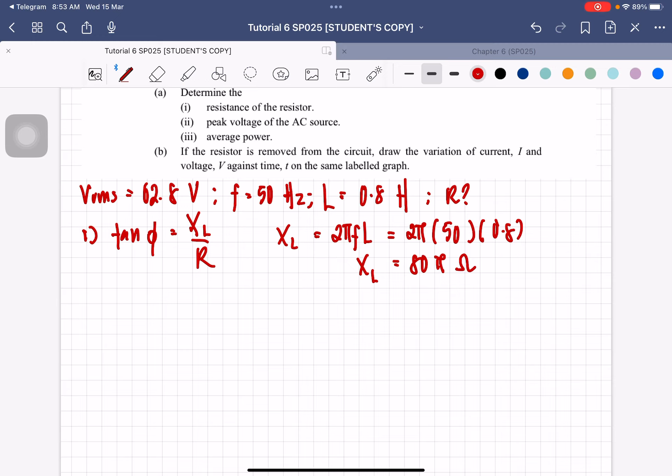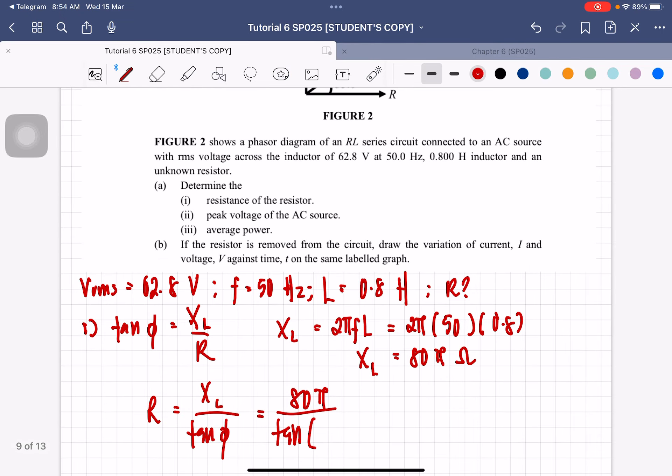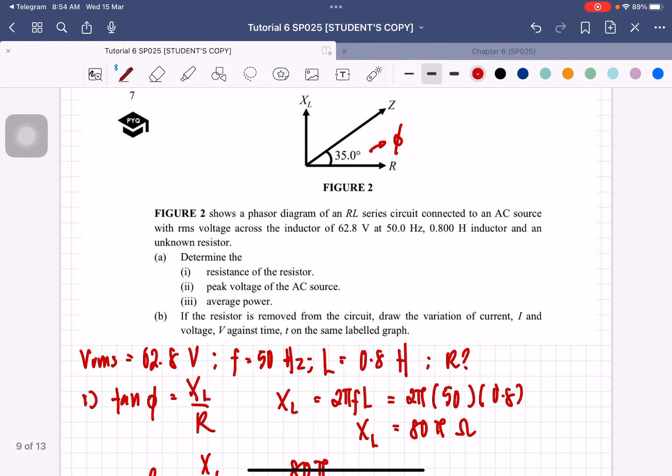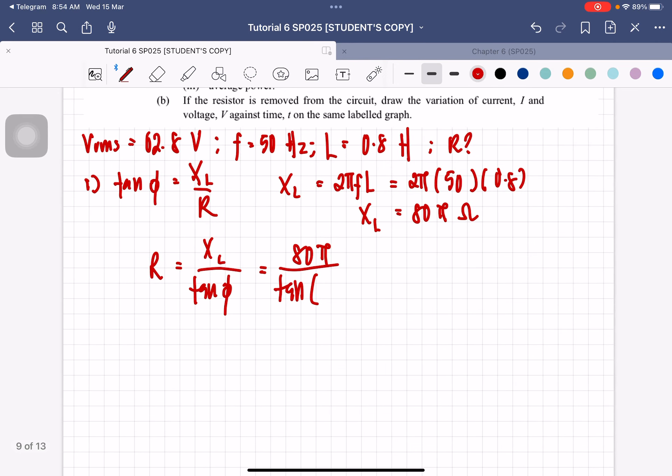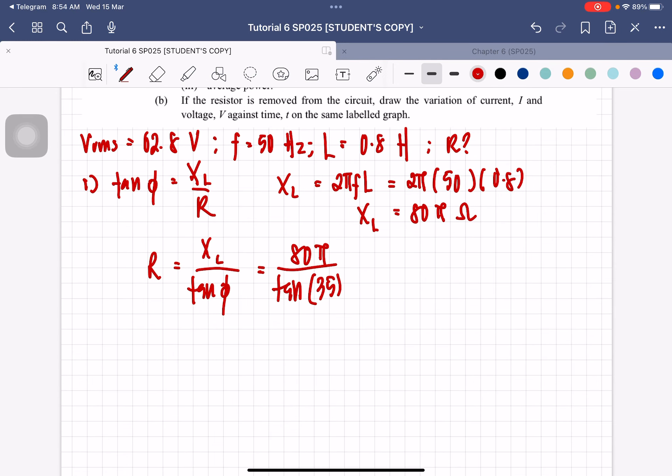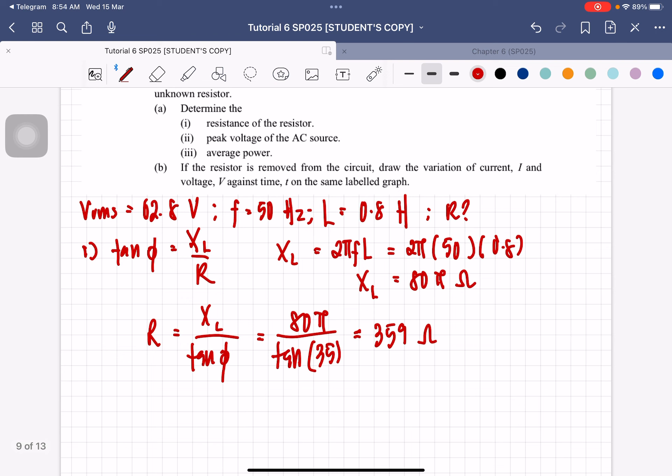This will then rearrange for R, this will be equal to XL over tangent phi, which will be 80 pi over tangent 35 degrees. So the value of resistance is equal to 359 ohm. So that is the value of resistor.